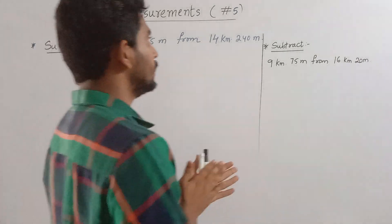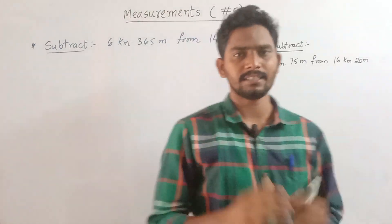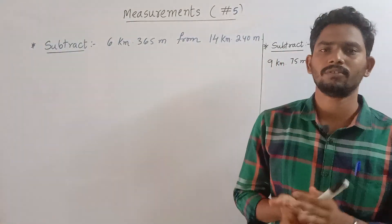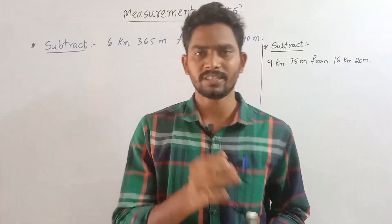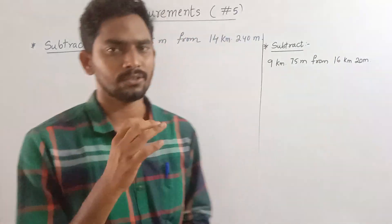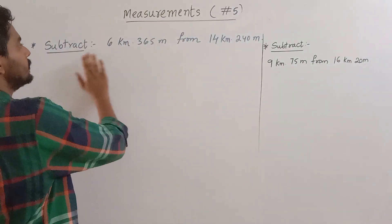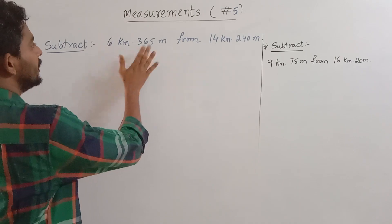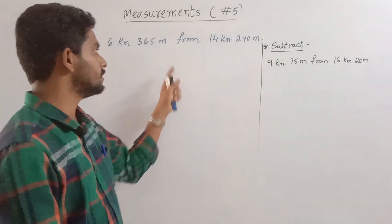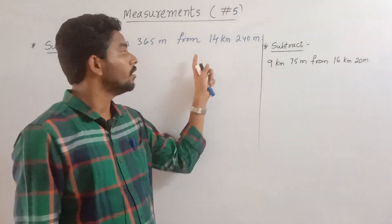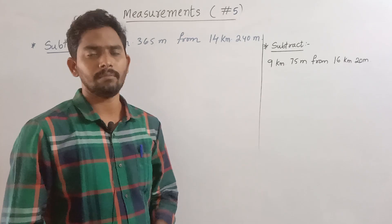In the last video, we talked about some details. Now, we will talk about subtraction. Subtract 6 km and 365 m from 14 km and 240 m.